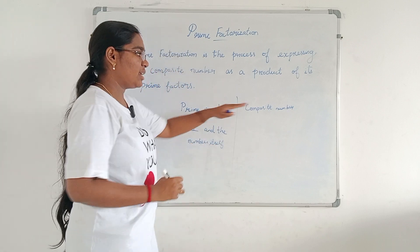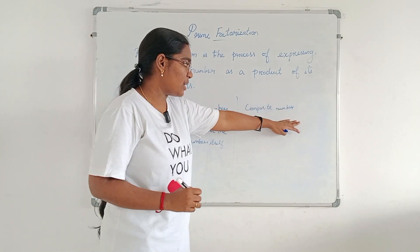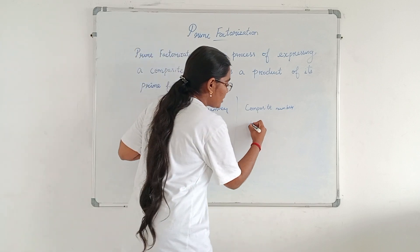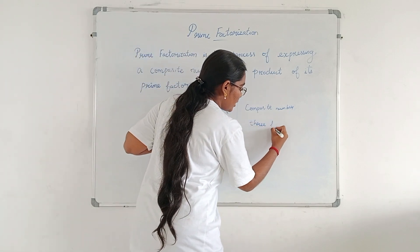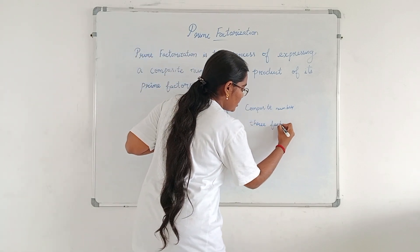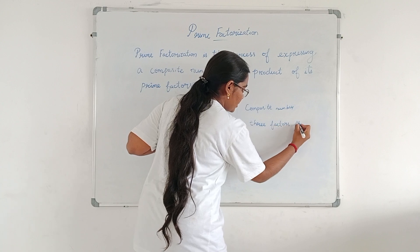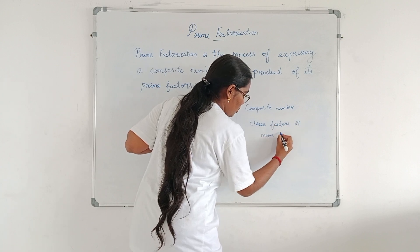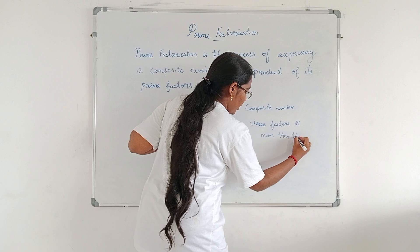Whereas, a composite number has more than two factors — that means three factors or more than that.